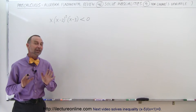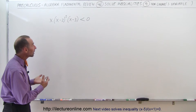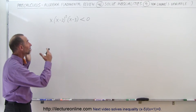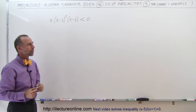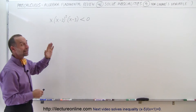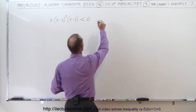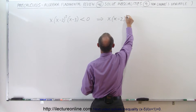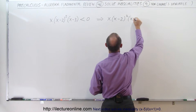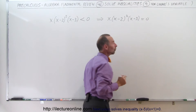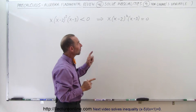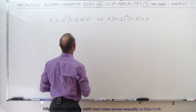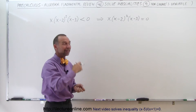Welcome to Electron Online. Now for something a little more challenging — we have a nonlinear inequality, and we're looking for the values of X which make the left side less than zero. To do that, we first write the equivalent equation: the quantity X times (X minus 2) squared times (X minus 3) equal to zero. We're looking for the values of X that make the left side equal to zero, which are the critical points on the number line used to find the regions that satisfy the inequality.